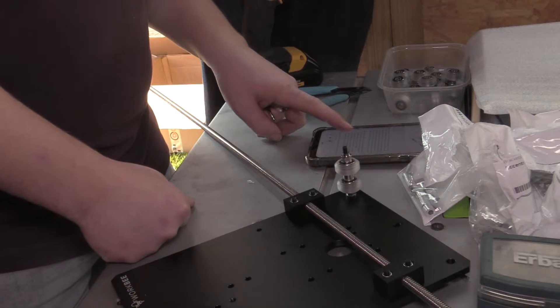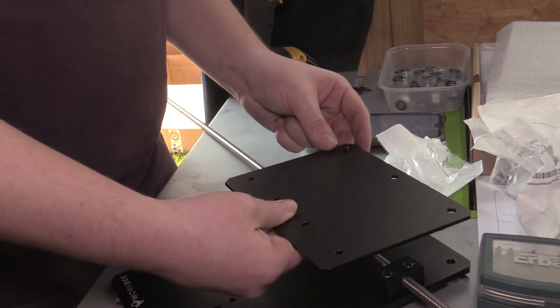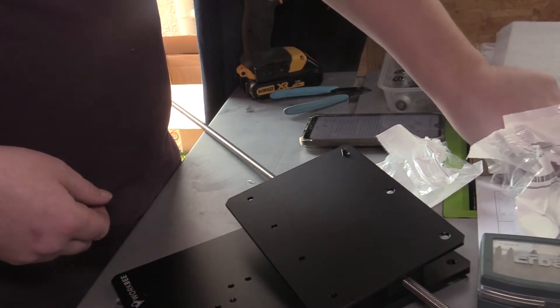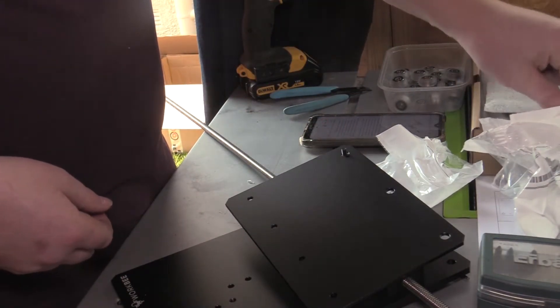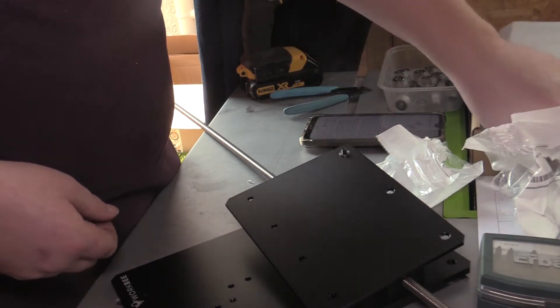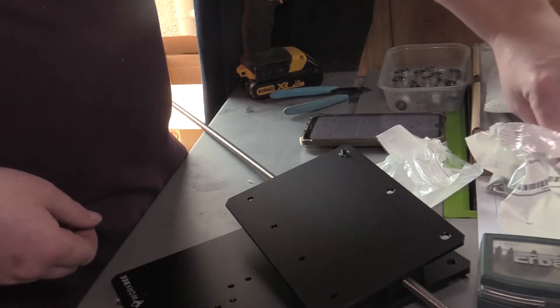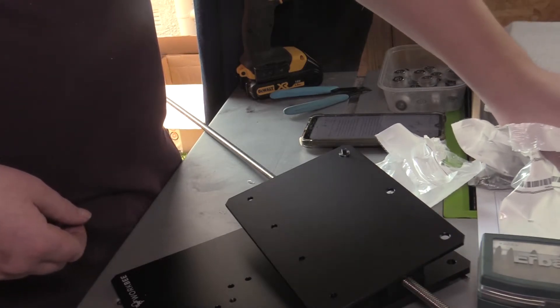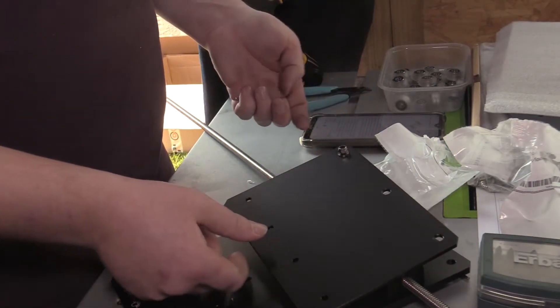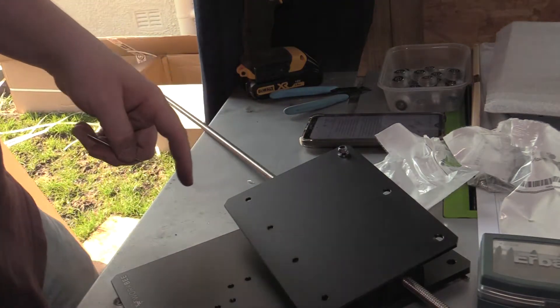Next we want the Y plate inner on top, then another precision shim and a nylock nut. I'm now going to do that with the rest of them and I'll bring you back once I've got them all done. So I've got the wheels fitted in the four corners of that Y axis plate.